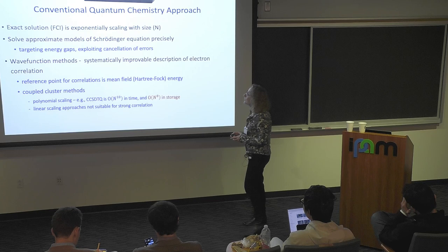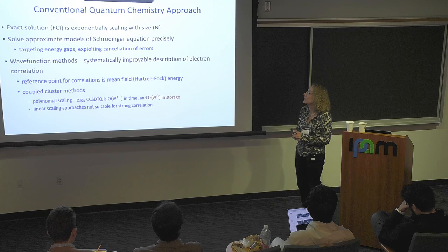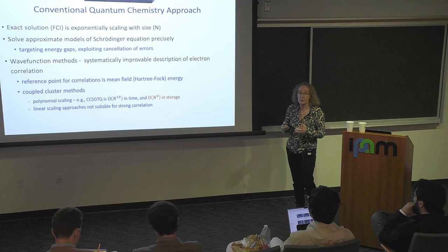Wave function methods are nice for thinking about electron correlation because they typically allow you to systematically improve your description of electron correlation — for instance, in coupled cluster you add more and more excitations in a systematic way. The reference point is the mean-field Hartree-Fock energy.